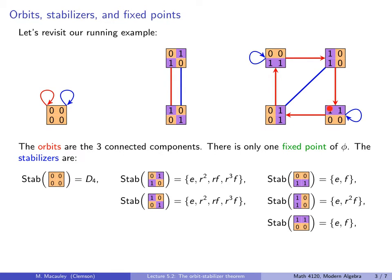The stabilizer of the square in the lower right is also {E, F}, because the identity fixes it and so does F — you can see this blue loop. And finally, the element in the lower left is stabilized by E and also by R²F.